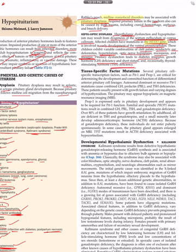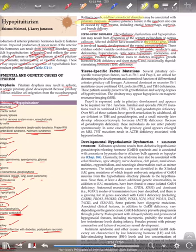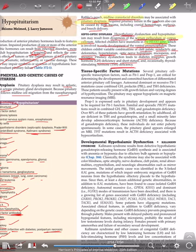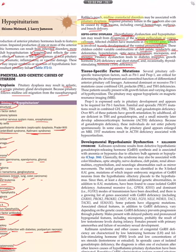To summarize septo-optic dysplasia: there is hypothalamic dysfunction giving rise to hypopituitarism due to dysgenesis of the septum pellucidum or corpus callosum. It affects children with the HESX1 gene mutation, involved in early development of the ventral prosencephalon. Features include cleft palate, syndactyly, ear deformities, hypertelorism, optic nerve hypoplasia, micropenis, and anosmia, plus pituitary dysfunction causing diabetes insipidus, growth hormone deficiency, short stature, and TSH deficiency.